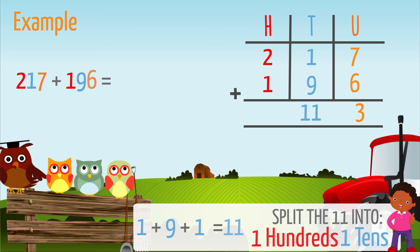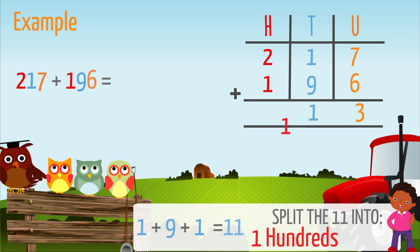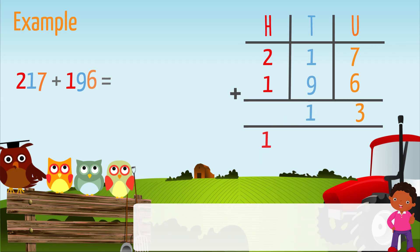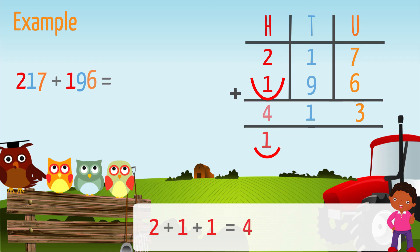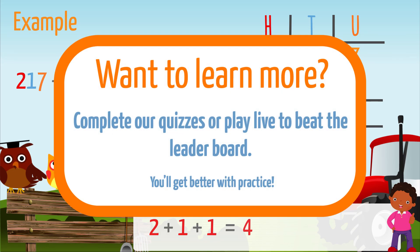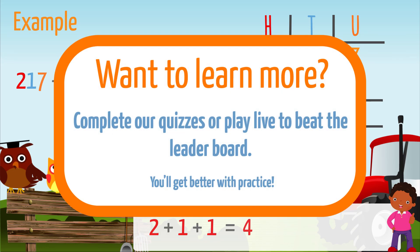Split the answer eleven into one hundred and one ten. We will then write one in the tens column and one under the equals sign in the hundreds column. Add the hundreds: two plus one plus one carried over equals four. The answer is 413.